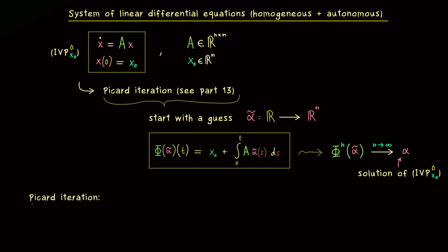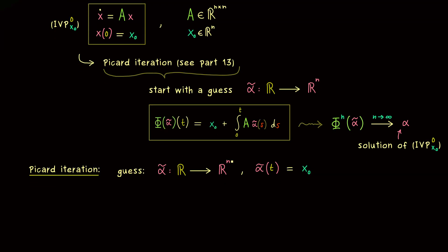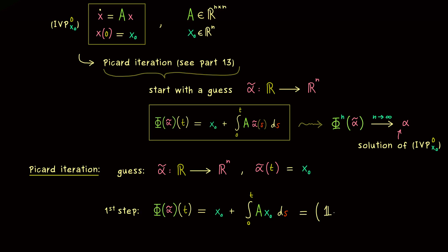The first guess for the solution is always the constant solution, so the initial condition is definitely satisfied. Then we do the first step of the Picard iteration by applying φ to α̃, which requires computing one integral. Since everything inside is constant, it's just the matrix times the vector times t. Combining both parts, we can factorize to get the n×n identity matrix plus t times A, multiplied by x₀.